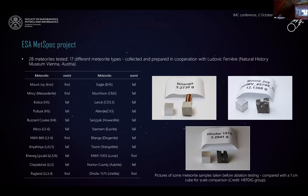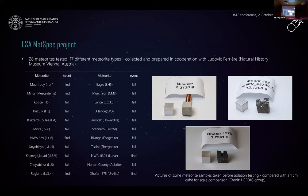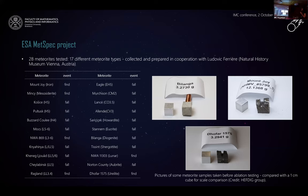Overall, we have tested 28 meteorites in the laboratory, representing 17 different meteorite types. These meteorite samples were collected and prepared in cooperation with meteorite experts from the Natural History Museum in Vienna, Austria. Almost the whole range of meteorite types and classes were tested, including irons, stony irons, and stones — ordinary chondrites, carbonaceous chondrites, and achondrites. Samples were cut into about one-centimeter pieces.